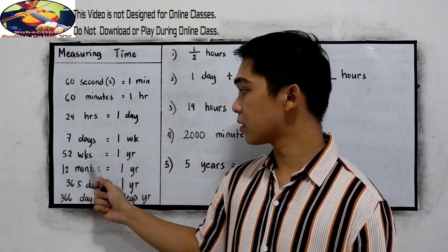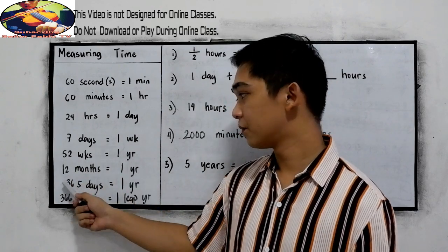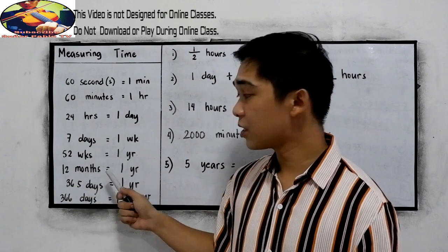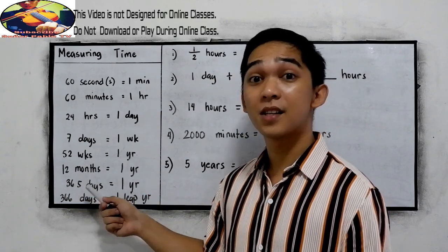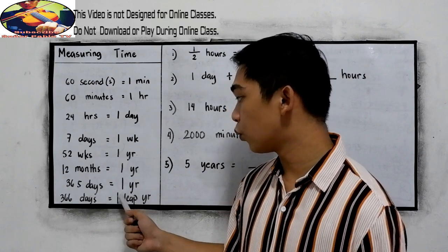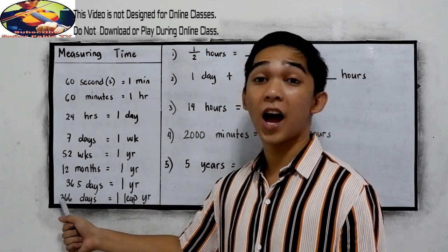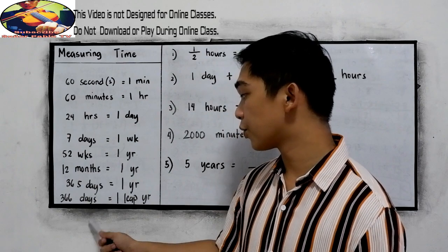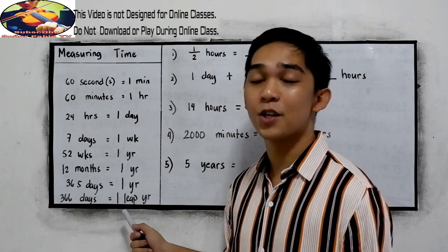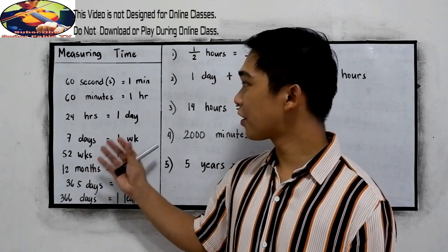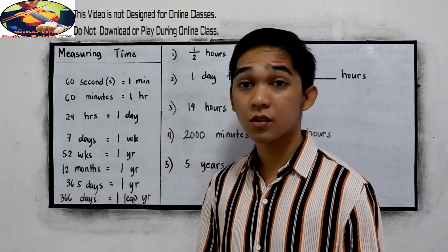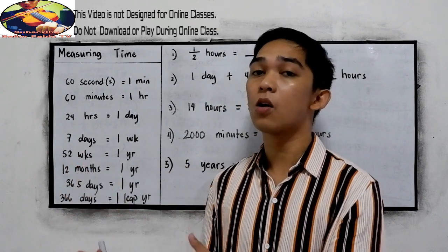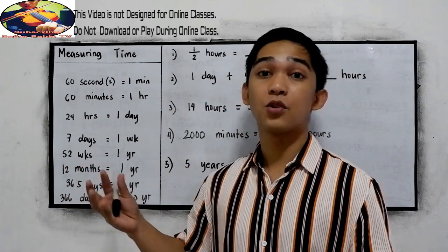52 weeks is equal to 1 year. 12 months is equal to 1 year. 365 days is equal to 1 year. And 366 days is equal to 1 leap year. You better familiarize the following conversions so that you can easily solve problems in measuring time.